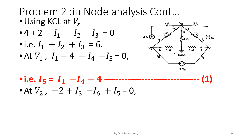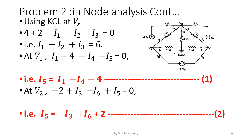At node V2, the current source 2 amps is leaving and the current I3 is entering. Similarly, I6 current is leaving and I5 current is entering. Therefore, the equation is minus 2 plus I3 minus I6 plus I5 is equal to 0. That is, I5 is equal to minus I3 plus I6 plus 2. Consider this as equation 2.